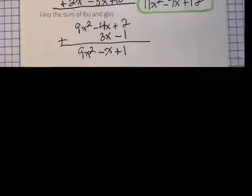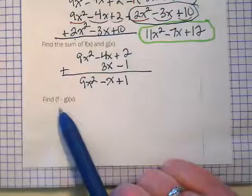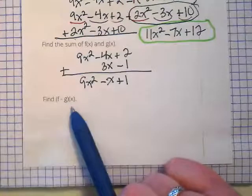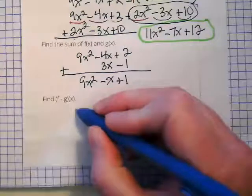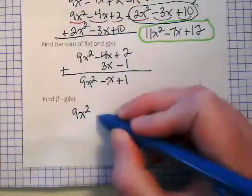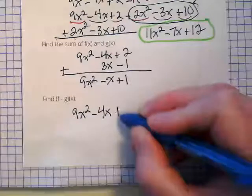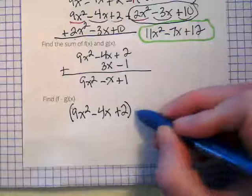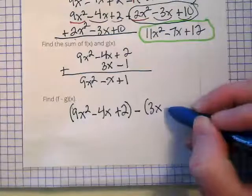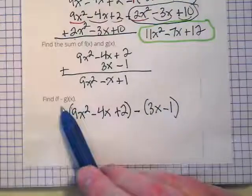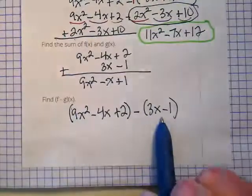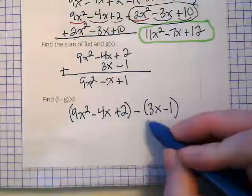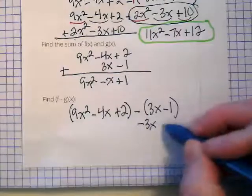And finally, we are being asked to find f minus g of x. So let's write this as 9x squared minus 4x plus 2 minus 3x minus 1. There's my f minus my g of x. These are both of x, so that's where that got combined. This will become negative 3x plus 1.